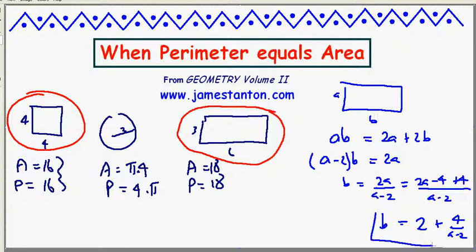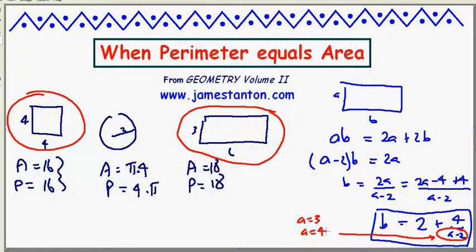Now that very much looks like a fraction, so there's a formula for B. But if I want to stick with whole numbers, I can do it as long as I make this denominator a factor of 4. So that means I either need A minus 2 to be 1, that is A equals 3, or A minus 2 to be 2, which is A equals 4, or A minus 2 to be 4, which means A better be 6.